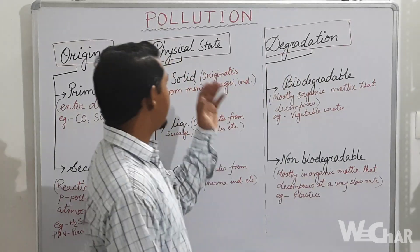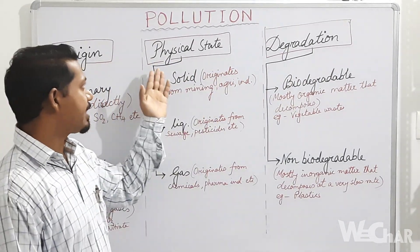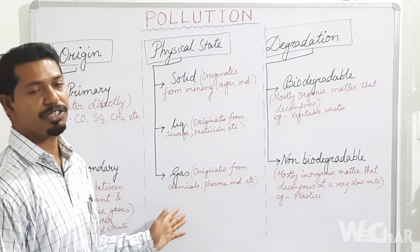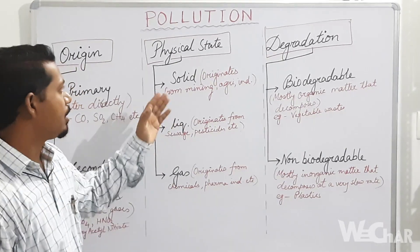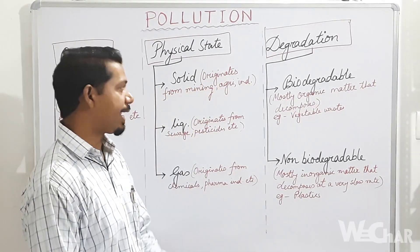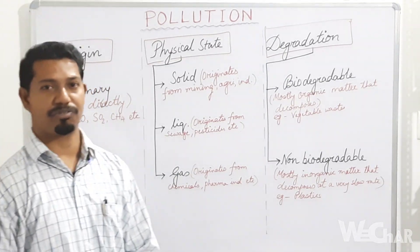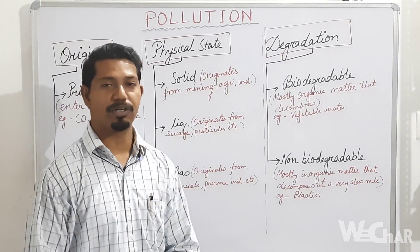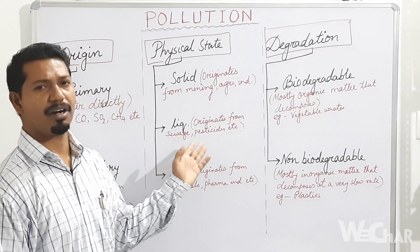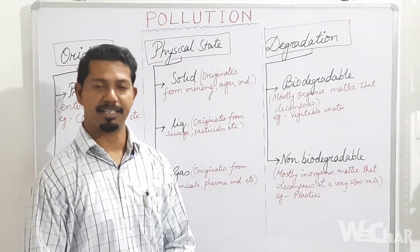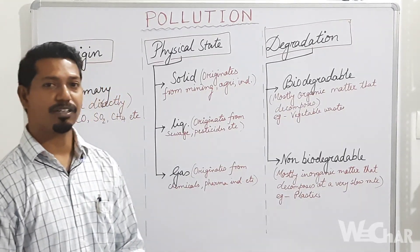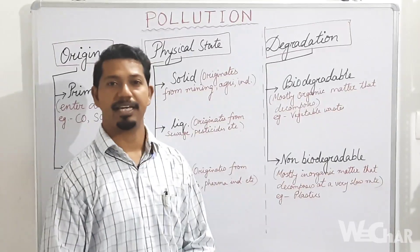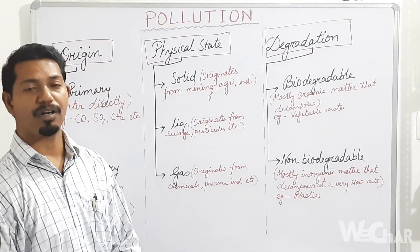Coming to the physical state classification: on the basis of physical state, pollutants are categorized as solid, liquid, and gaseous. Solid pollutants originate from mining, agriculture, and industrial activities. Liquid pollutants originate from sewage, runoff water, pesticides, insecticides, etc. Gaseous pollutants mainly originate from industries, chemical factories, and the burning of fossil fuels.